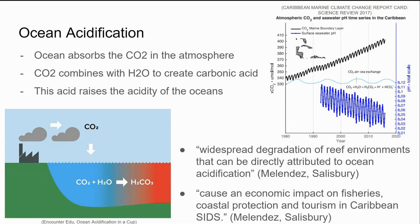As you can see, as the CO2 levels have been increasing, the pH levels have been decreasing, meaning the oceans are getting more and more acidic. This is a problem because studies have shown that reef environments and the decline of them can be directly attributed to ocean acidification. This can also lead to other problems such as economic impacts and coral reefs providing less and less protection for coastal cities.